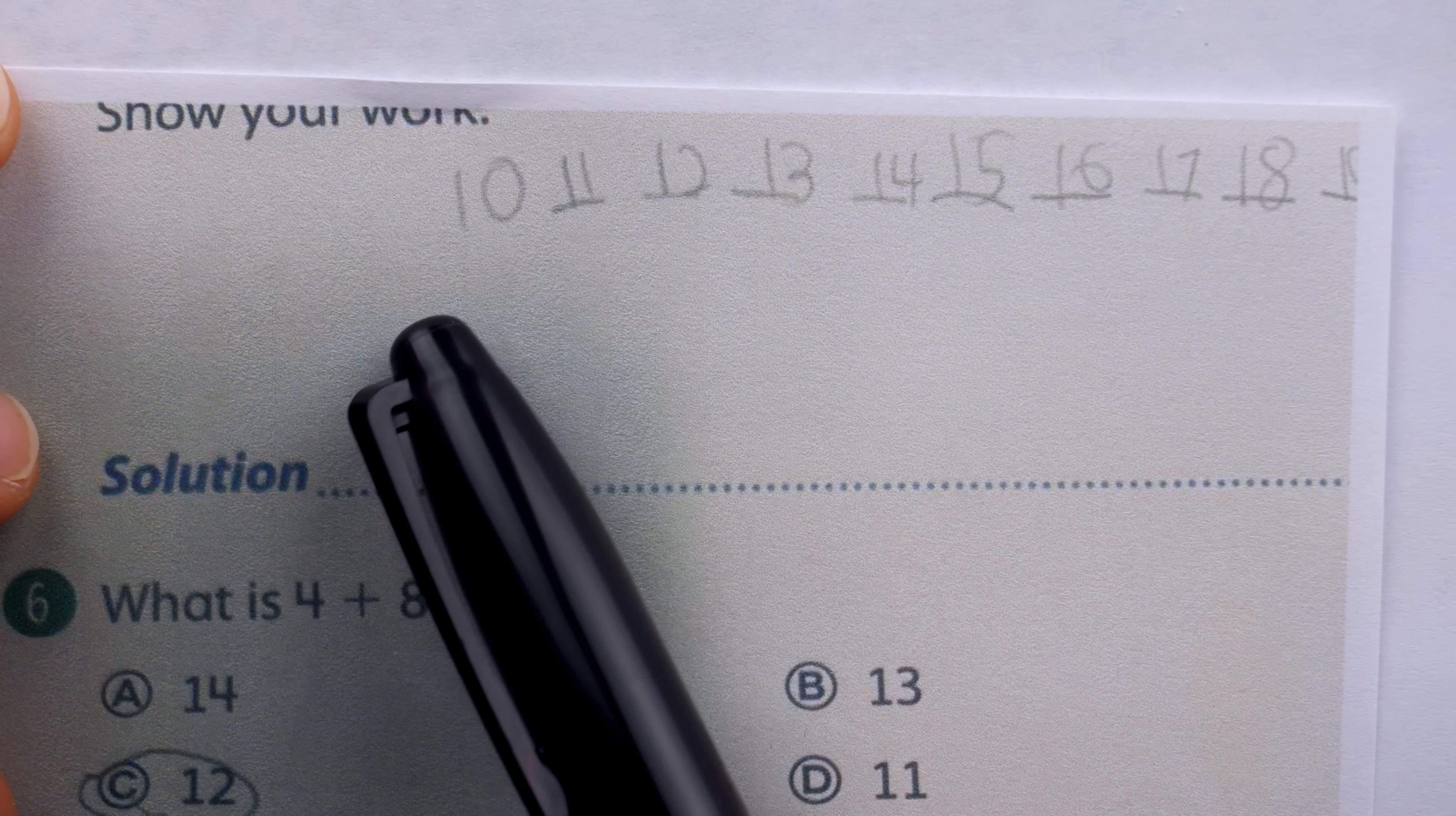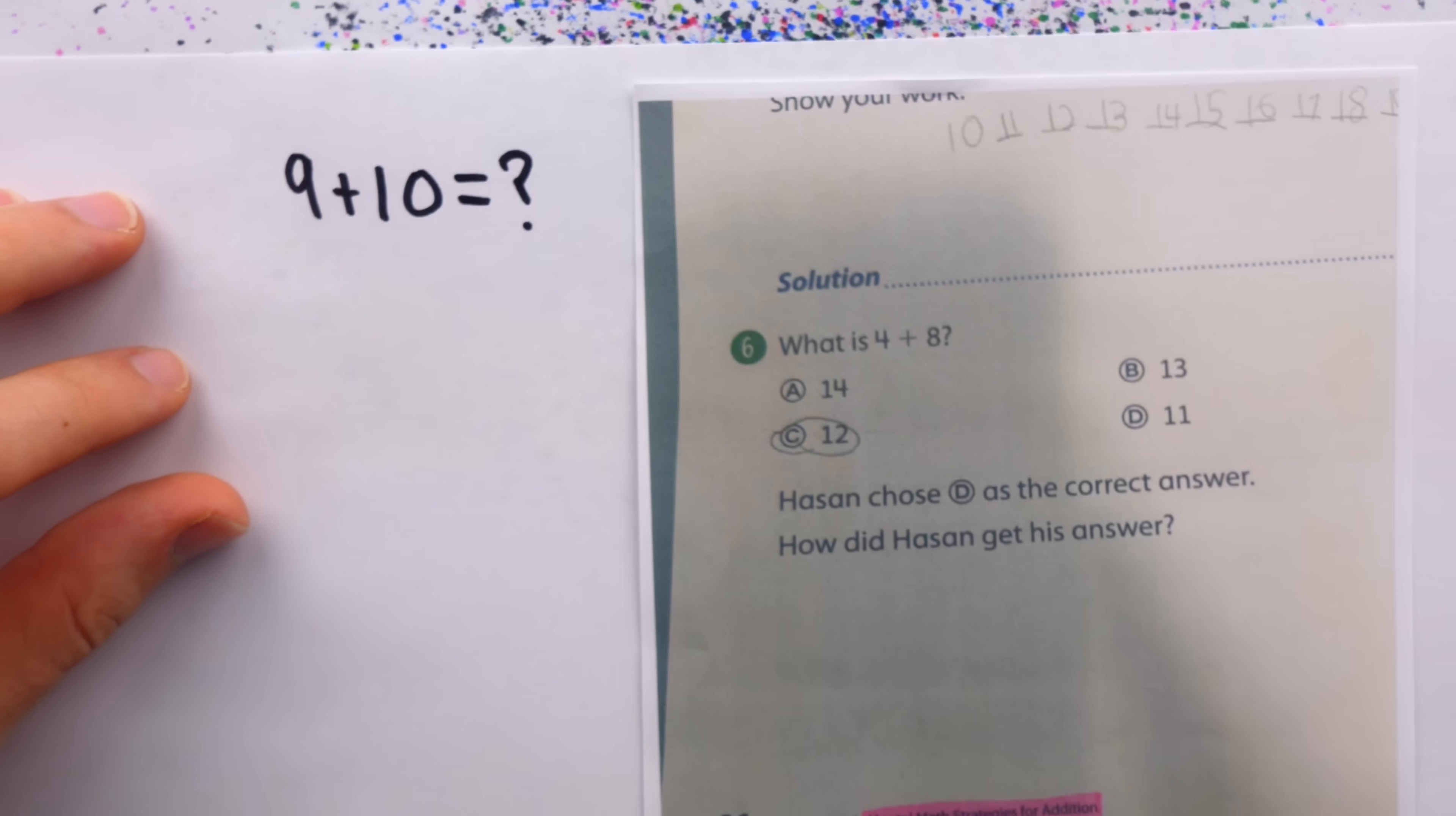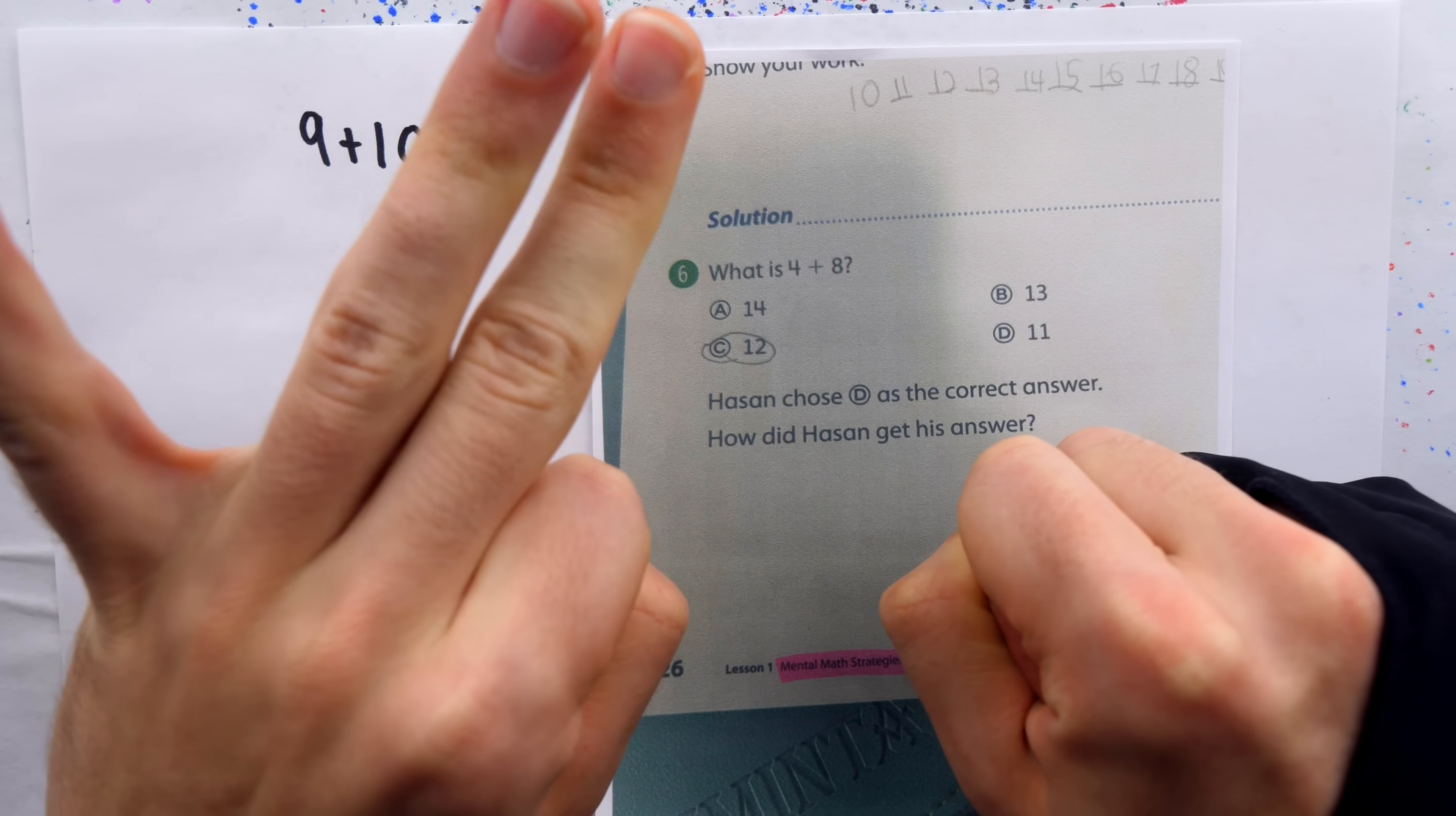They appear to be counting, maybe from 10 up to 19. Perhaps the question was something like 9 plus 10. And how do little kids do addition? Easy. They count on their fingers. So we start with 9 in our heads, and then we count up using our fingers 10 times. So I have 9 and then 10, 11, 12, 13, 14, 15,